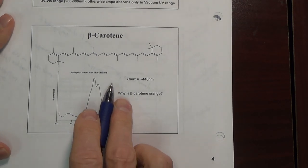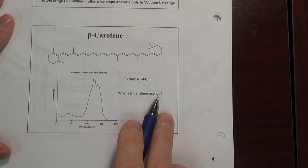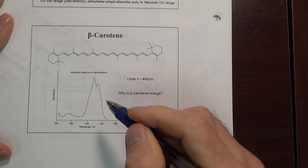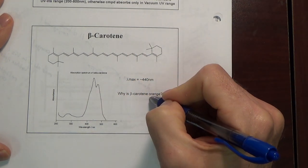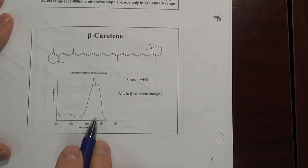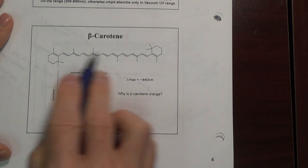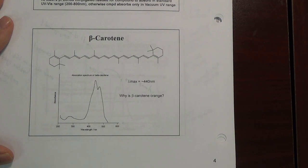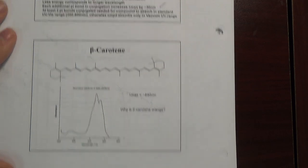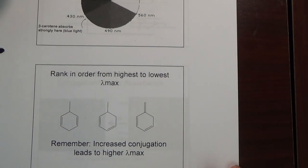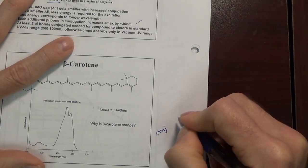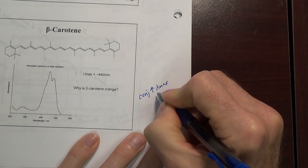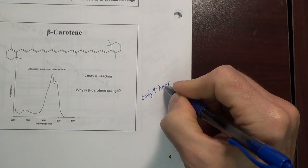So again, why is beta carotene orange? It's absorbing largely in the visible — it's absorbing blue light and thus reflecting orange. The reason it absorbs in the visible, and is red-shifted to a longer wavelength, is because of all the conjugation. Conjugation increases the lambda max. We're not talking about intensity — we're talking about wavelength position, the position of maximum absorbance.